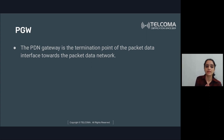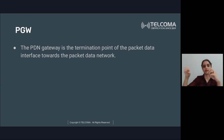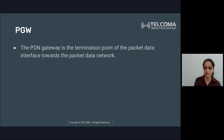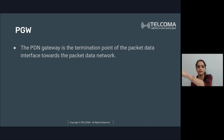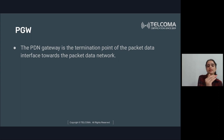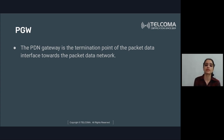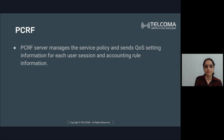PGW, PDN gateway, is the termination point of packet data towards the packet data network. For uploading, data travels from UE to eNodeB to SGW to PGW and then to PDN. For downloading, data travels from PDN to PGW to SGW to eNodeB to UE. The path and suitable serving gateway are allocated by MME as the main signaling node.